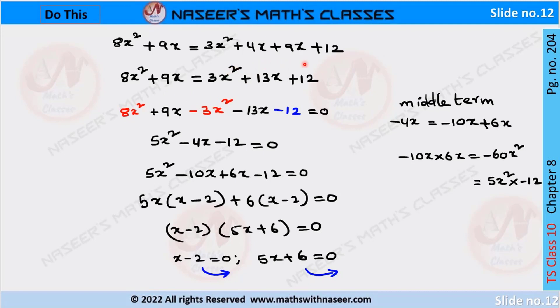In the left-hand side, 4X plus 9X is written as 13X. We transpose all terms from the right-hand side to the left-hand side. Then we can write it as 8X squared plus 9X minus 3X squared minus 13X minus 12 equals 0. After simplification, we can write 8X squared minus 3X squared as 5X squared, 9X minus 13X as minus 4X, minus 12 equals 0.